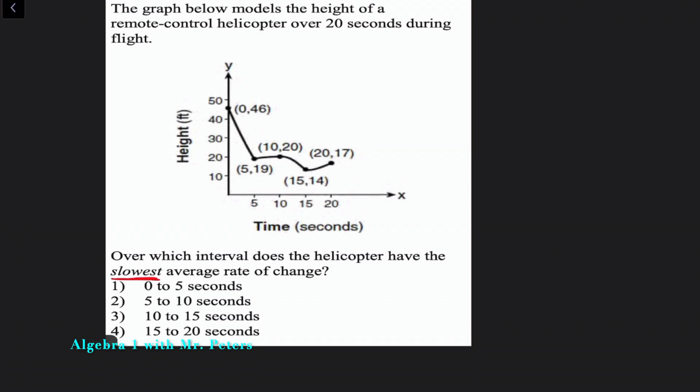So let's look at zero to five seconds. So we're talking about these two ordered pairs right here. So once we do that first one, we're going to have forty six minus nineteen divided by zero minus five. And this is going to give us twenty seven or negative twenty seven over five. So that's our first average rate of change.